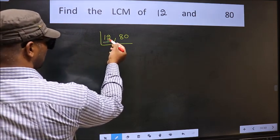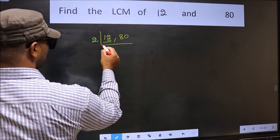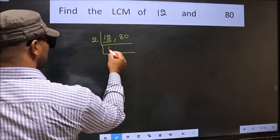For this number, last digit 2, even. So take 2. When do we get 12 in 2 table? 2, 6, 12.